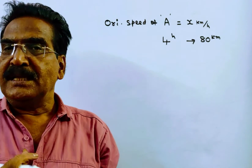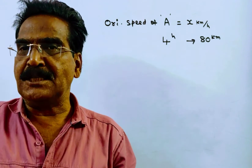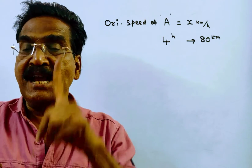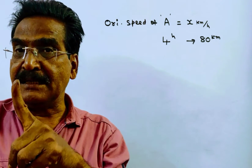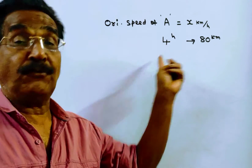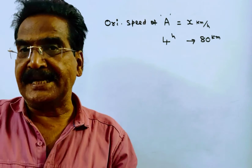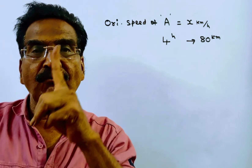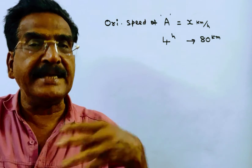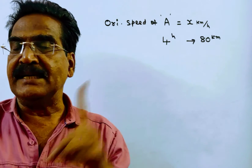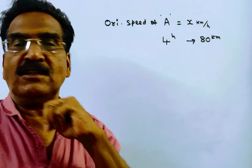Let us go to the second statement. If A doubles his speed, he takes only 1 and a half hours more than B. That means earlier A takes 4 hours more than B, but now by doubling his speed, he takes only 1 and a half more than B. So by doubling his speed, he gained 4 minus 1 and a half, which is 2 and a half hours.